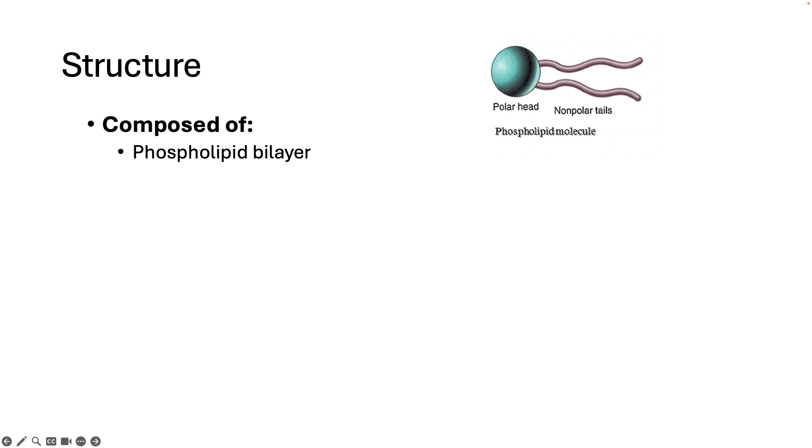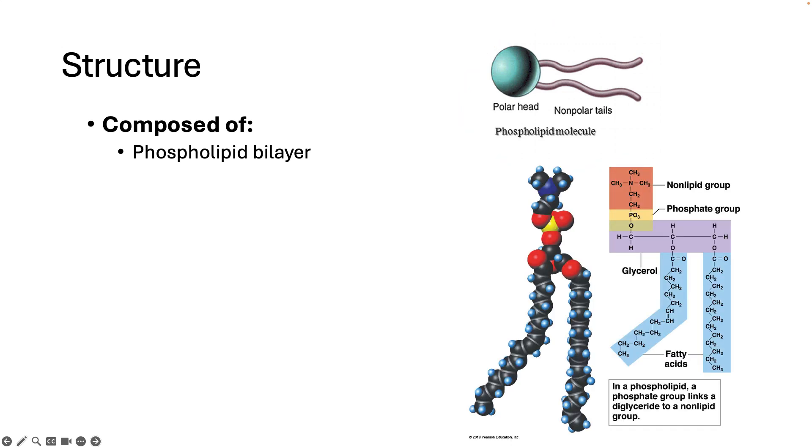The plasma membrane primarily consists of phospholipid molecules, which is a type of lipid. They are often drawn like this with a round head and two hanging tails. This drawing from Chapter 2 in your textbook shows their structure a little bit more in detail.